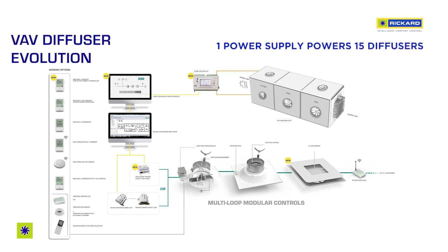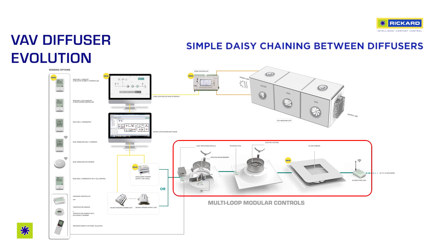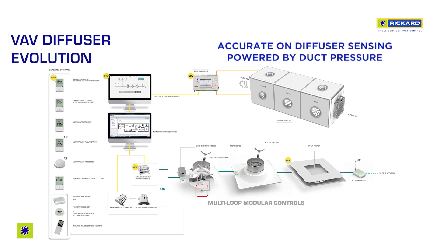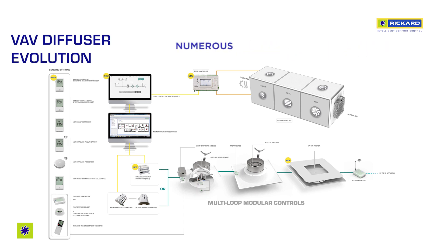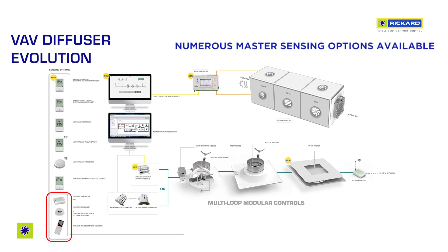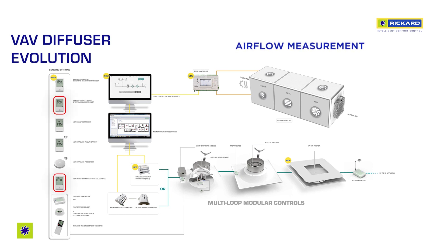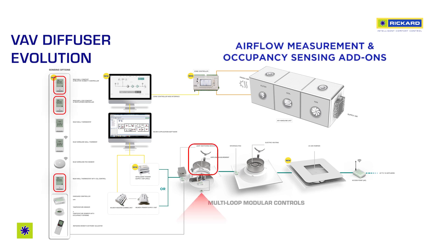Record's advanced MLM system has been designed to maximize the benefits of a VAV diffuser system. A power supply can power up to 15 diffusers with a simple daisy chain cable system. Every diffuser uses a powerful induction system to sample room air so that accurate control is possible. Controller options range from on-diffuser sensing and control to remote wired and wireless wall thermostats. CO2, humidity control, airflow measurement and occupancy sensing are all available as add-ons.